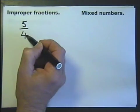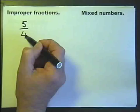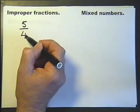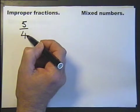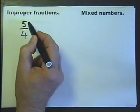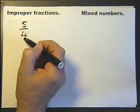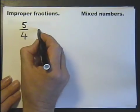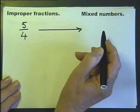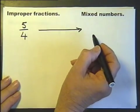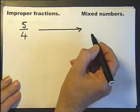Now an improper fraction is always greater than 1. That may be obvious, but I thought I'd say it. An improper fraction being top-heavy is always greater than 1, always larger than 1. Now an improper fraction can be written as a mixed number.